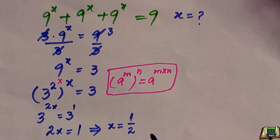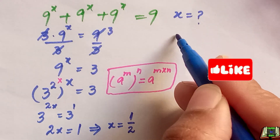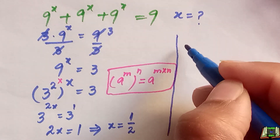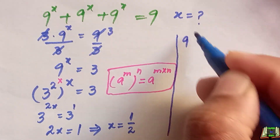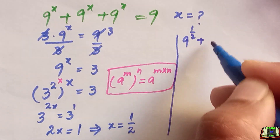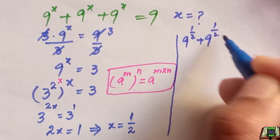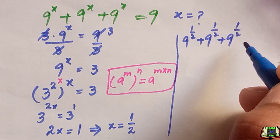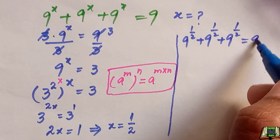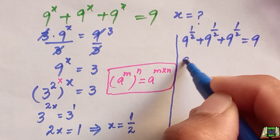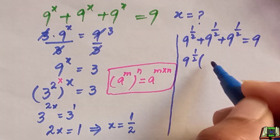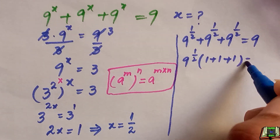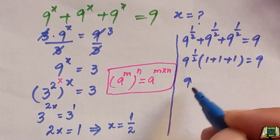In the next step we are going to verify that this value of x is correct. We substitute x = 1/2: 9 raised to power 1/2, plus 9 raised to power 1/2, plus 9 raised to power 1/2 is equal to 9. Taking 9 raised to power 1/2 as common, inside the bracket we have 1 plus 1 plus 1, which equals 3.